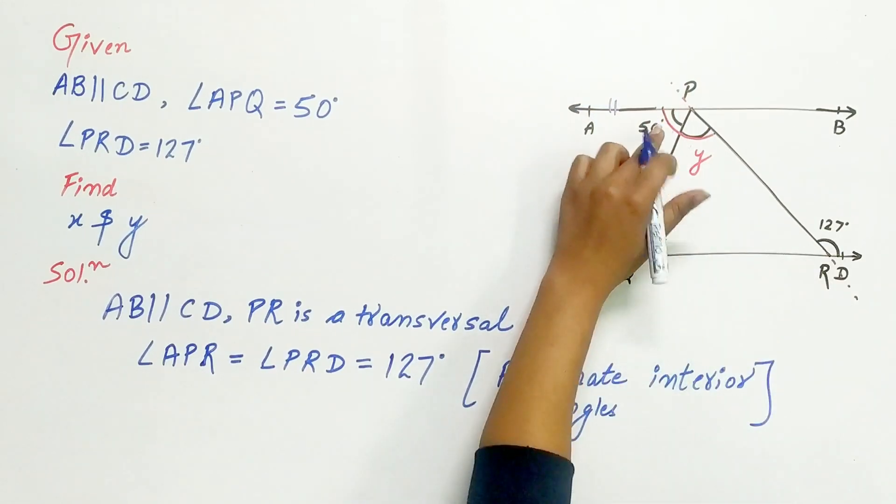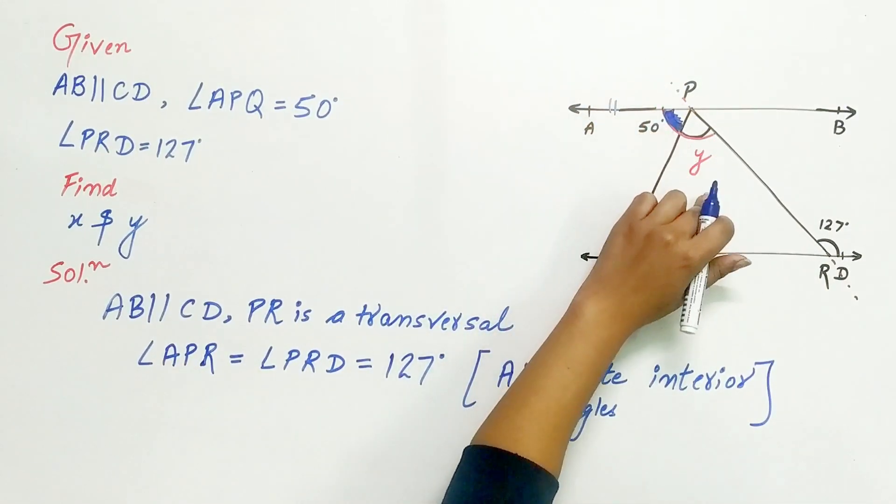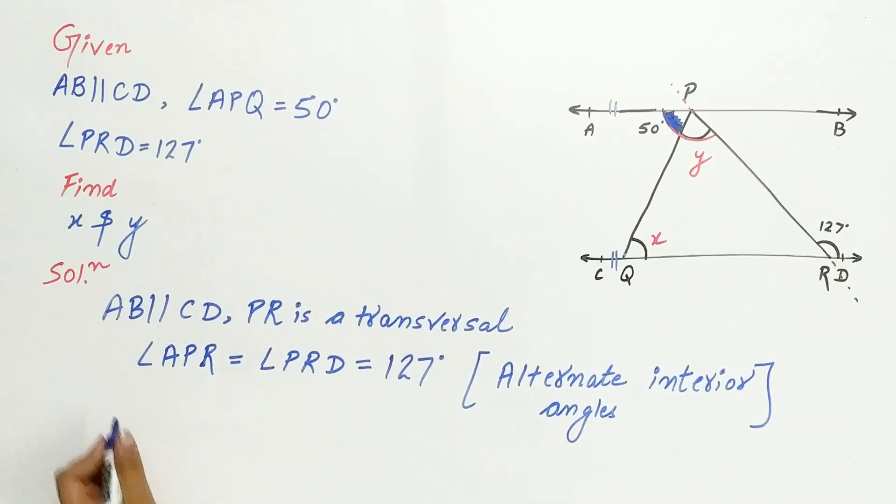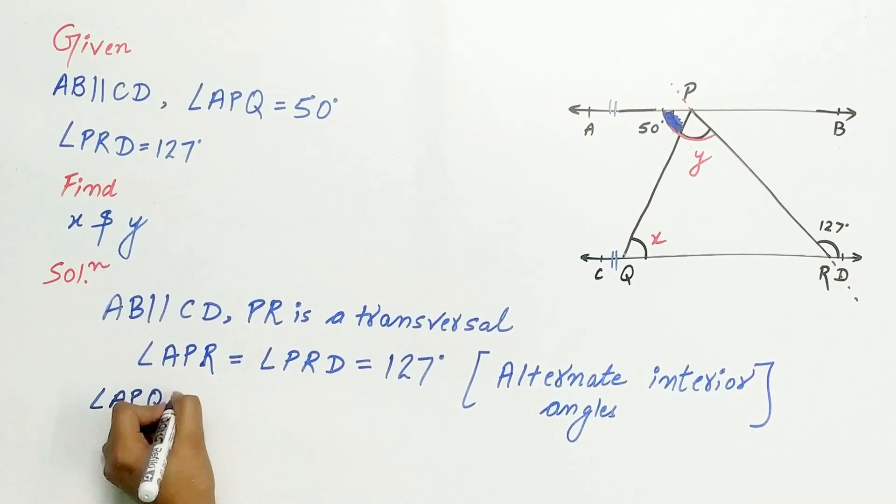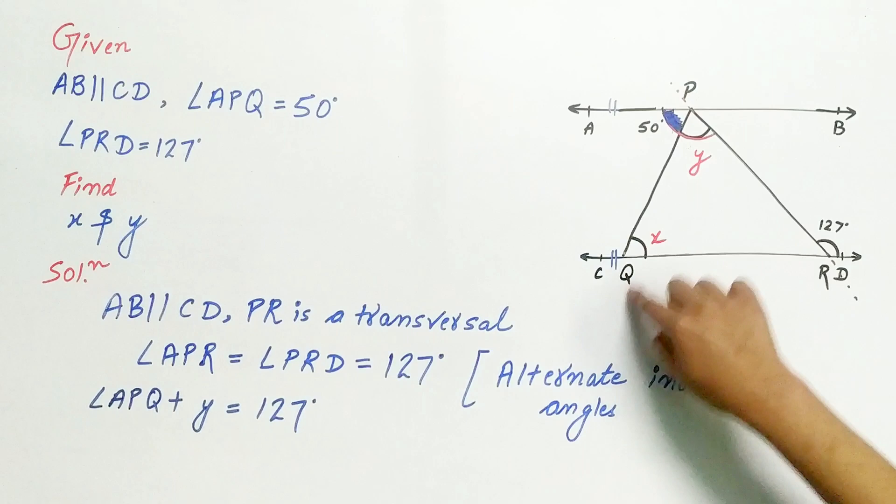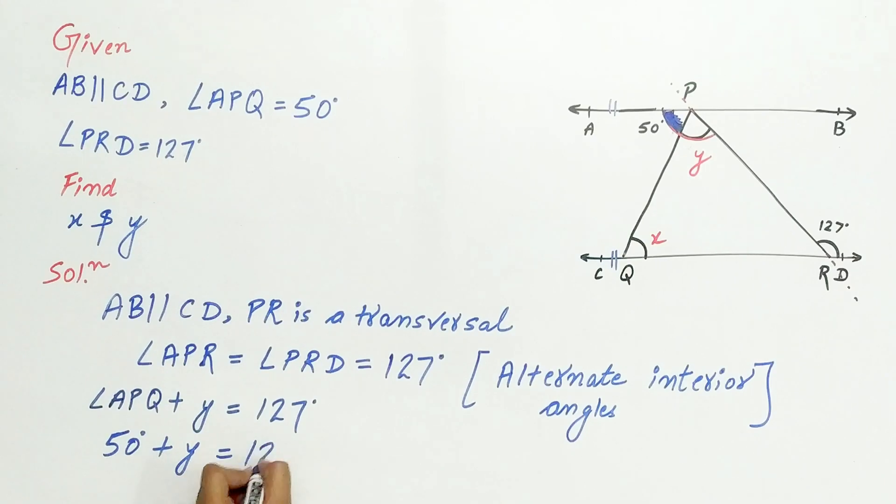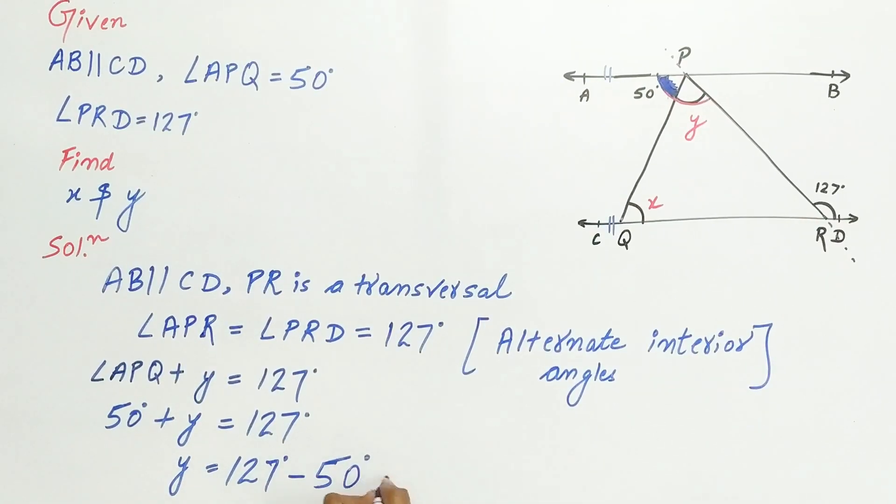APR is made up of two angles: APQ and angle y. Now, angle APQ plus y equals 127 degrees. 50 degrees plus y equals 127 degrees. Transpose 50 degrees to the right-hand side: y equals 127 minus 50,